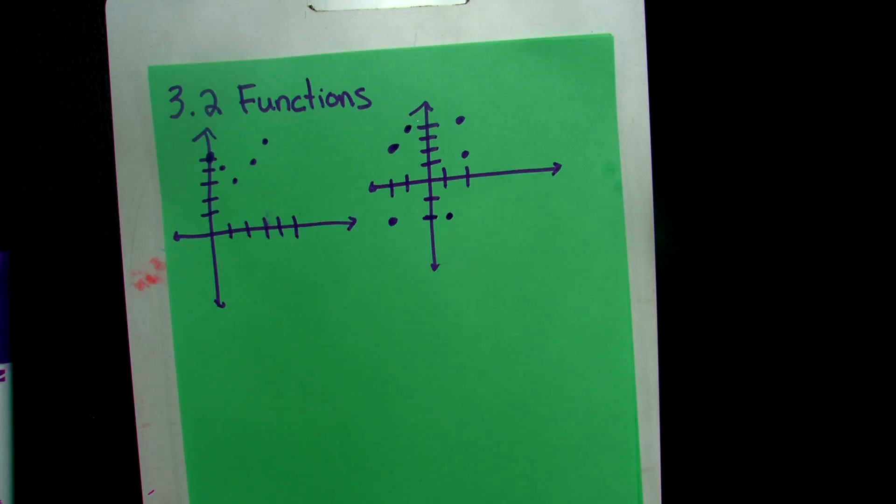So let's look at these two relations. We'll call this relation F and relation G. In our first graph, let's look at X equals 2, when X equals 2. So when X equals 2 in our first graph, Y is going to be equal to 3. So that means we have the point (2, 3) for relation F.